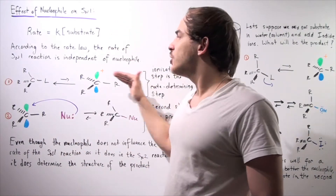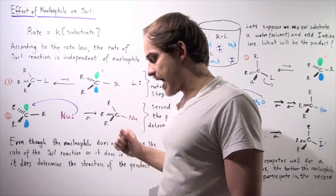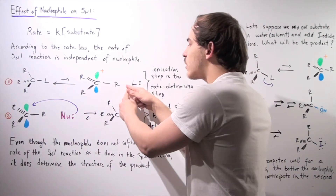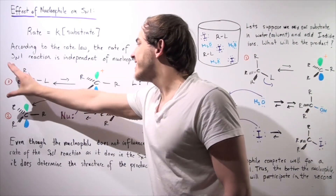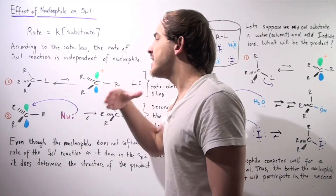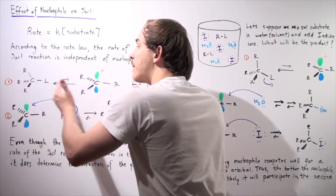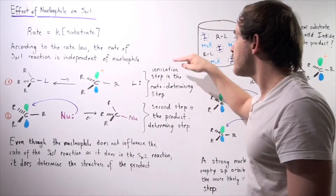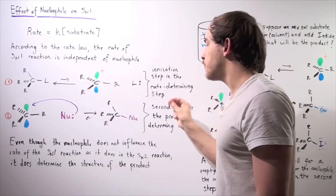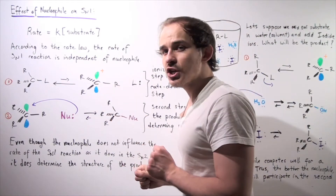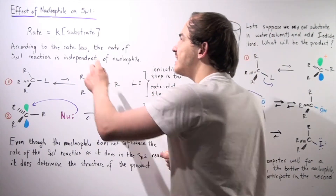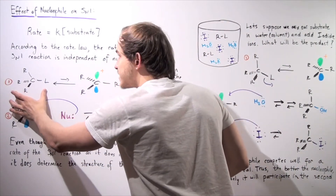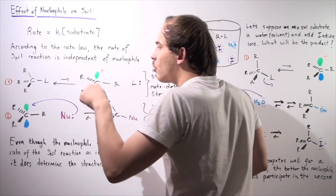In other words, if we look at the first step — the ionization step — our substrate dissociates into the carbocation intermediate as well as our leaving group, and our nucleophile does not take part in this step. Because this is the slowest step in our series of reactions, this is our rate-determining step. The ionization step is the rate-determining step, and in an SN1 reaction the rate is only determined by the substrate. If we increase substrate concentration, our rate increases; if we have less, our rate decreases.